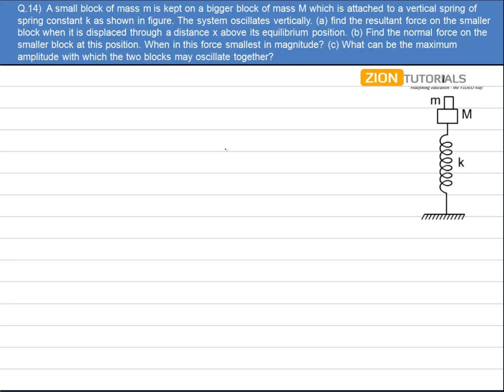A small block of mass m is kept on a bigger block of mass capital M which is attached to a vertical spring of spring constant k as shown in figure. The system oscillates vertically. Find the resultant force on the smaller block when it is displaced through a distance x above its equilibrium position.